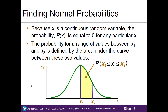With normal probabilities, because x is a continuous random variable — recall in Chapter 5 we were working with discrete random variables, numbers that you can count — in Chapter 6 we're doing continuous random variables, which includes all values even down to the decimal. That means the probability of a particular x is equal to zero, so it's not useful to find an exact x value. Instead, we look for the probability for a range of values between x-sub-1 and x-sub-2.